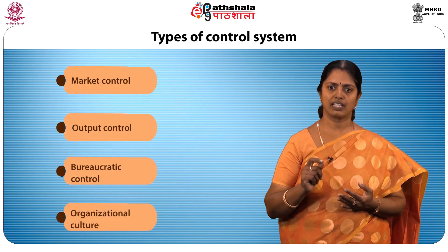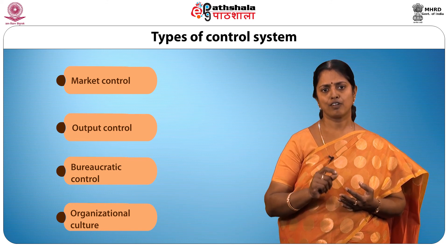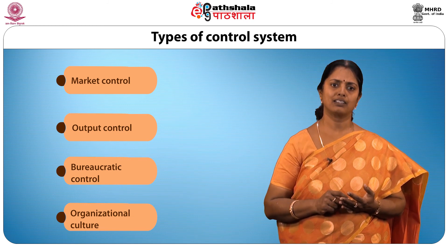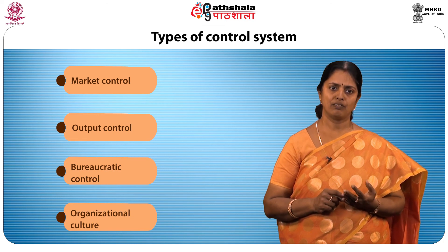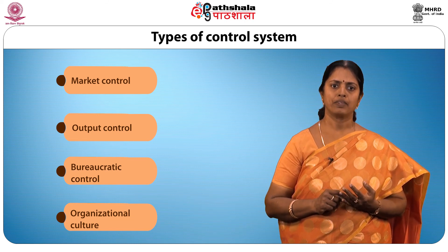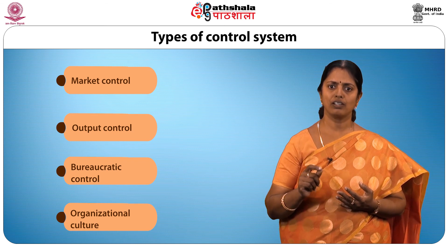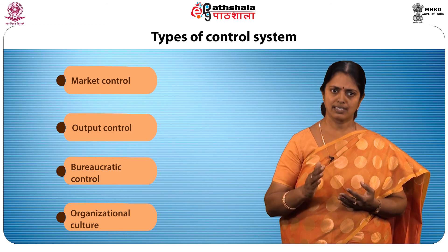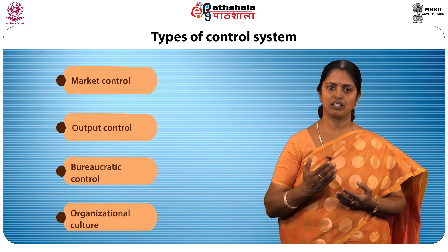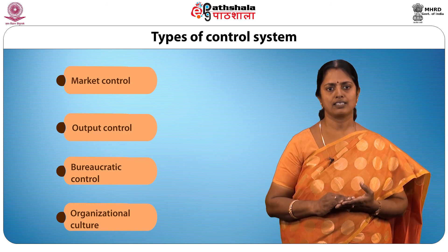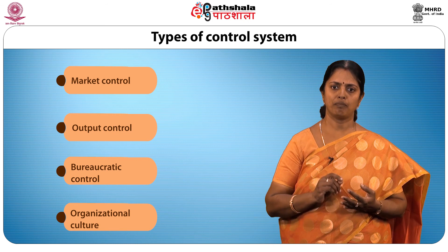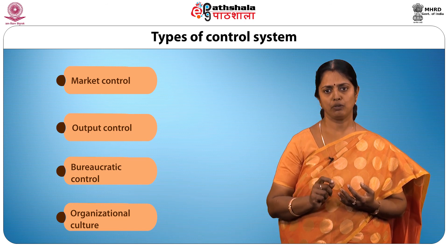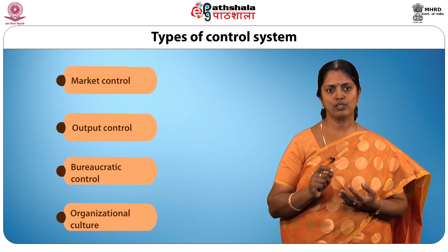There are four types of control system. Market control is based on comparison of one company with others in terms of stock market price and return on investment. Output control is adopted by managers when market control is difficult to evolve and systems of comparison between divisions and units do not exist; companies estimate suitable targets for divisions, departments, and employees and monitor performance against targets. Bureaucratic control operates through a comprehensive system of rules and procedures to direct the activities of divisions, functions, and individuals, standardizing the way to reach goals and develop accuracy.